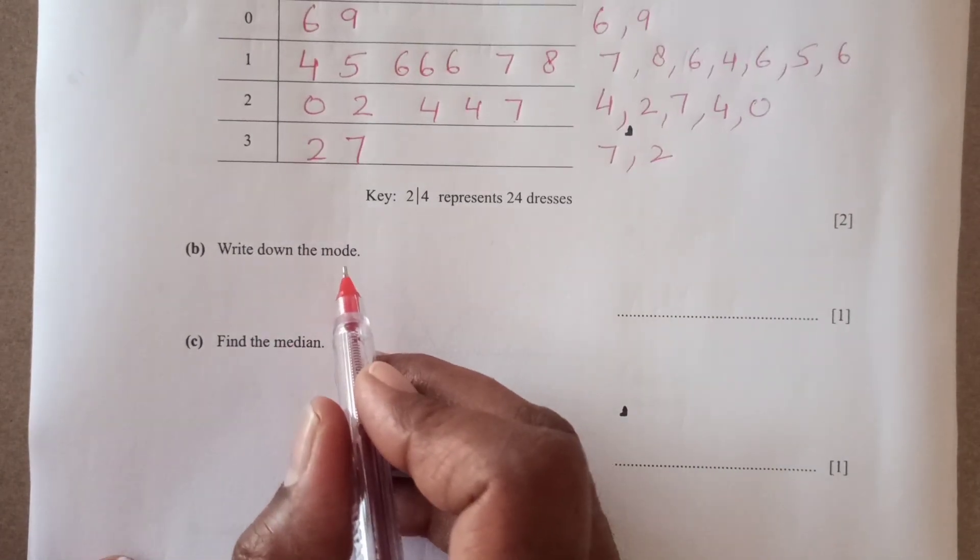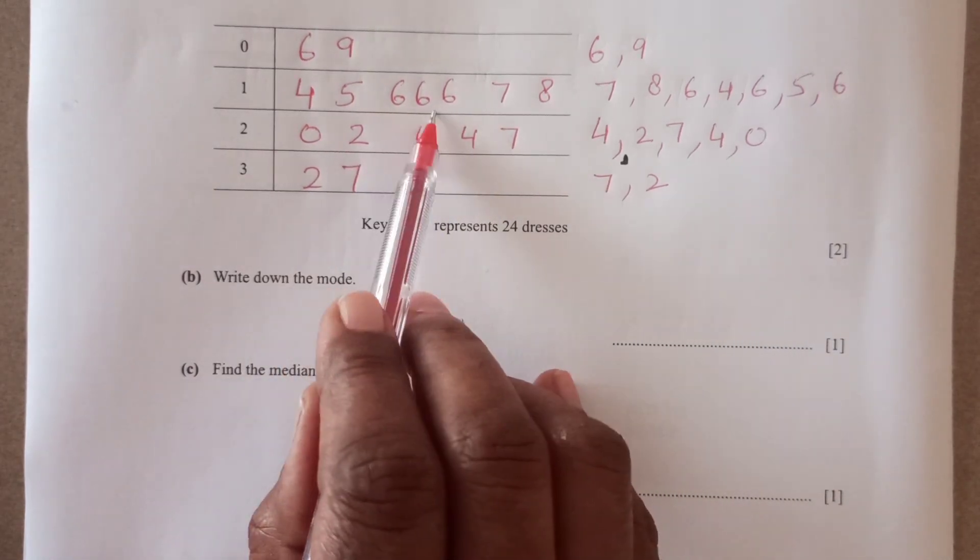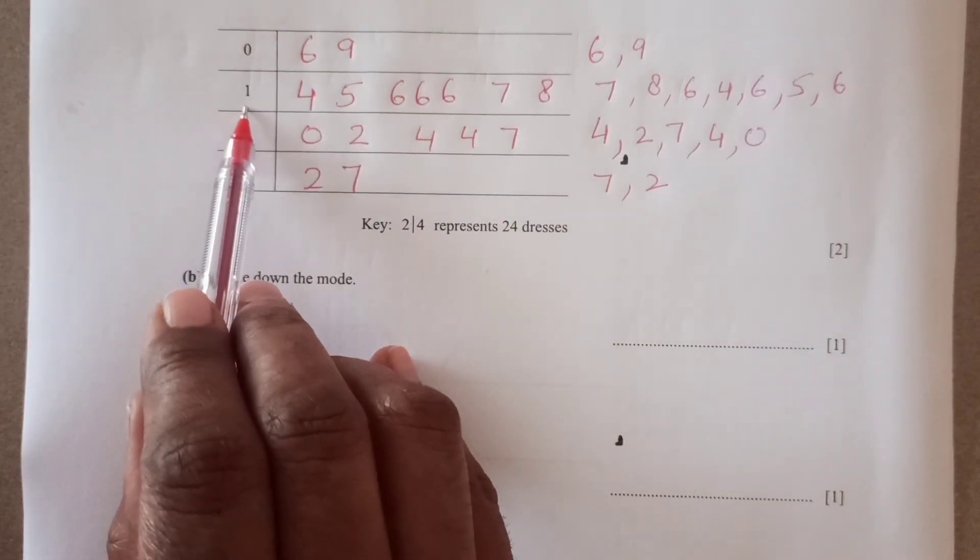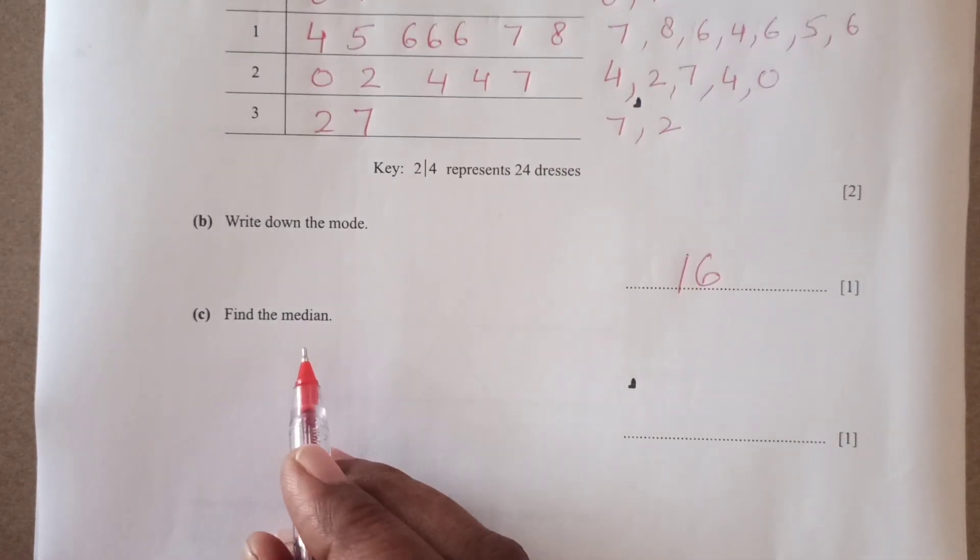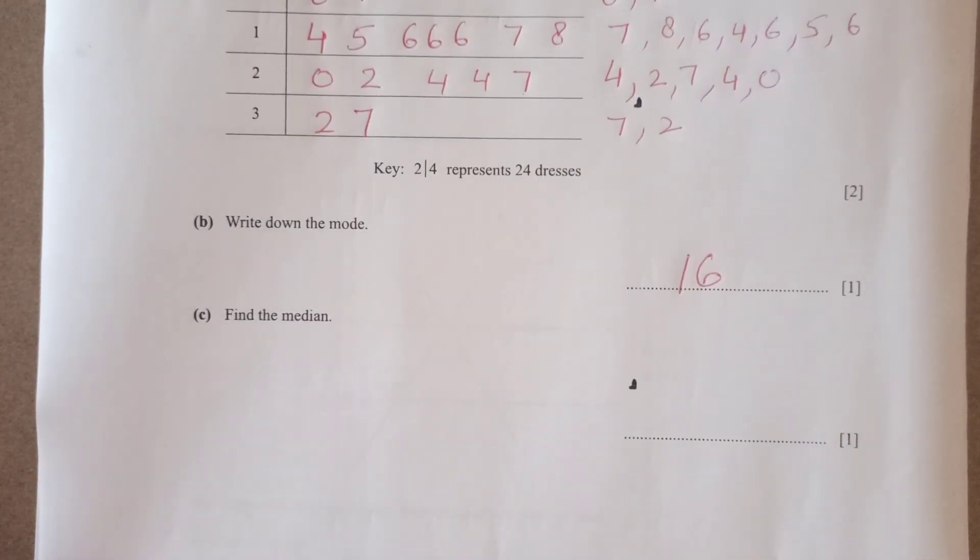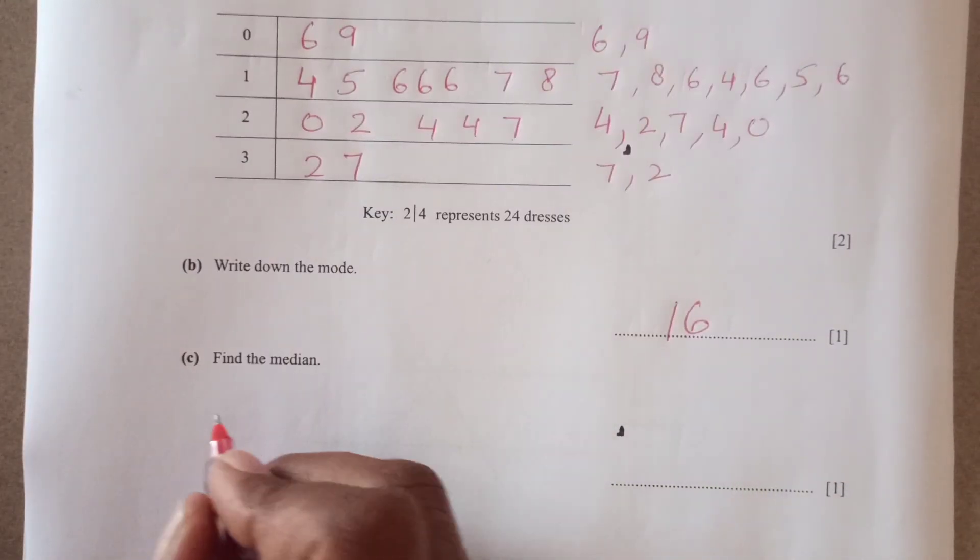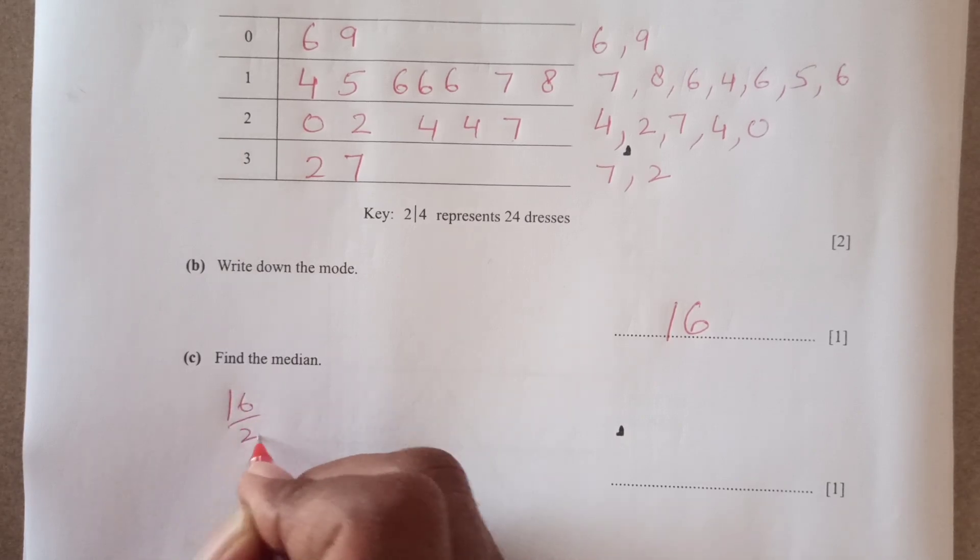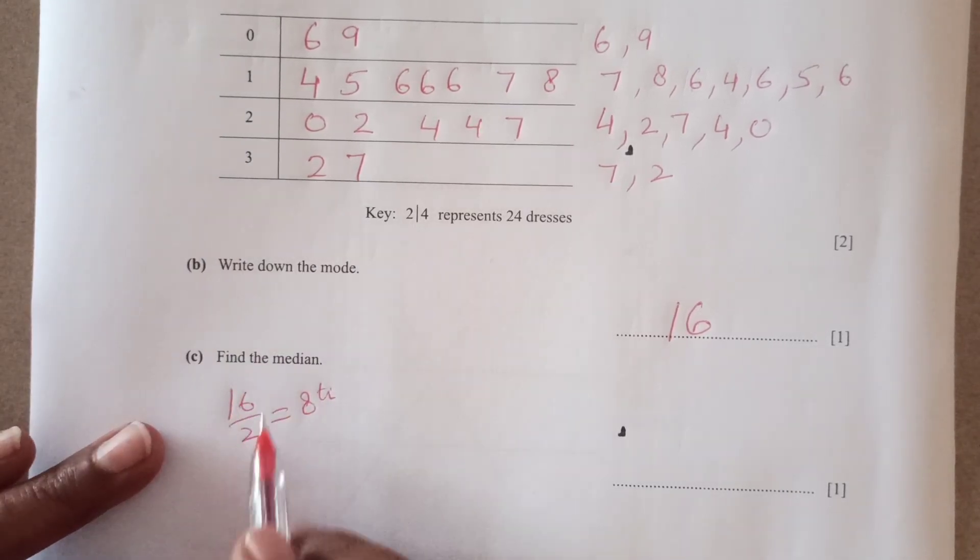Now write down the mode. Mode is the number that occurs maximum time. If you see this 6 is coming most of the time and there is 1 here. So mode is 16. Find the median. Median is the middle number. So as we have here the 16, so 16 median is 16 divided by 2. That is 8th value.